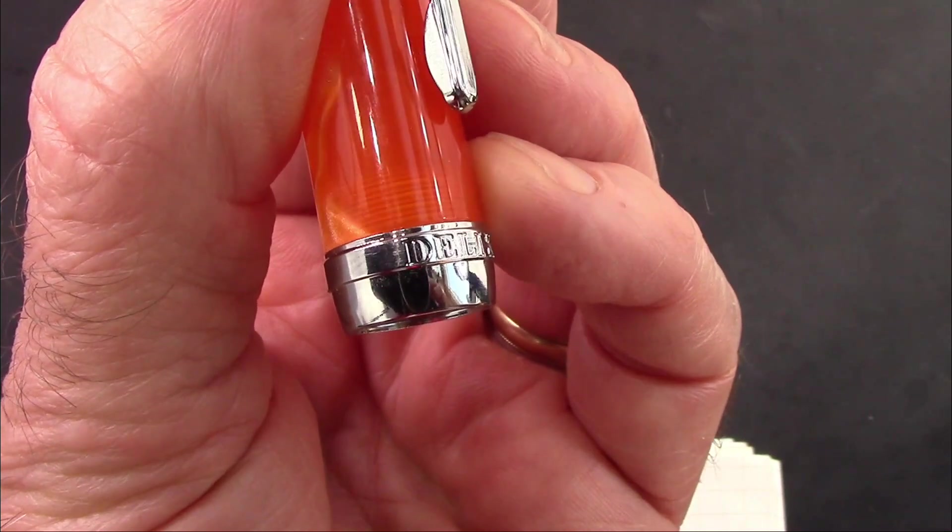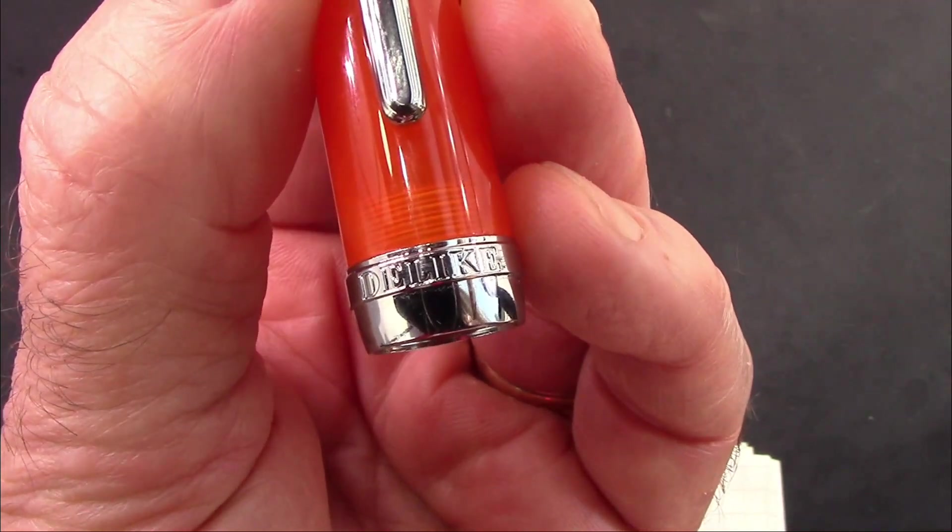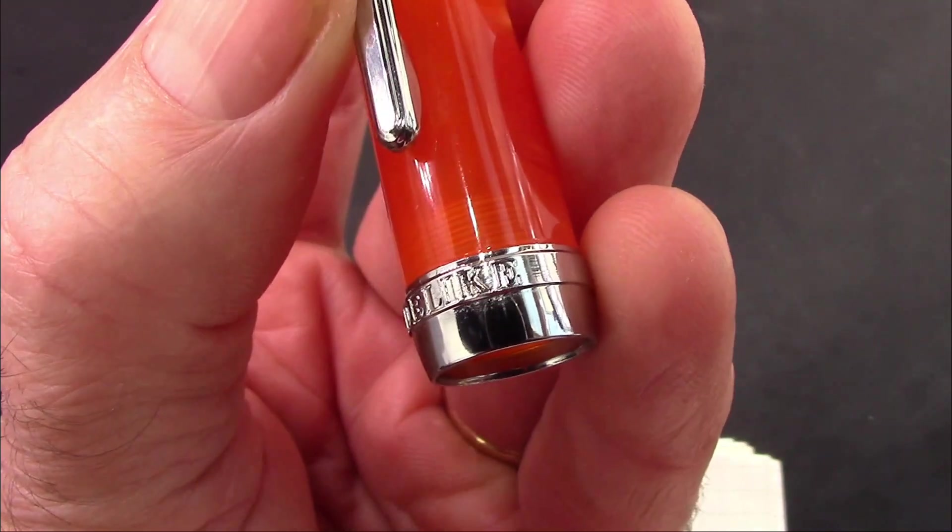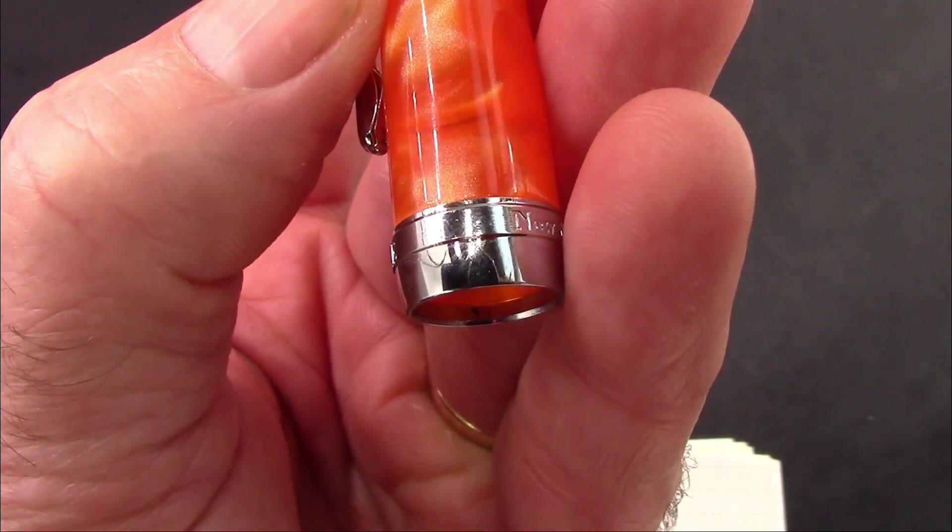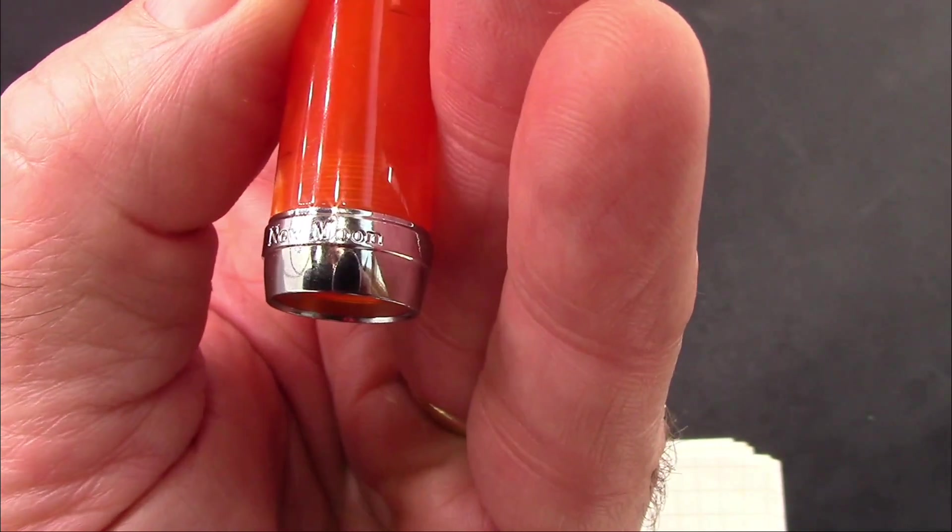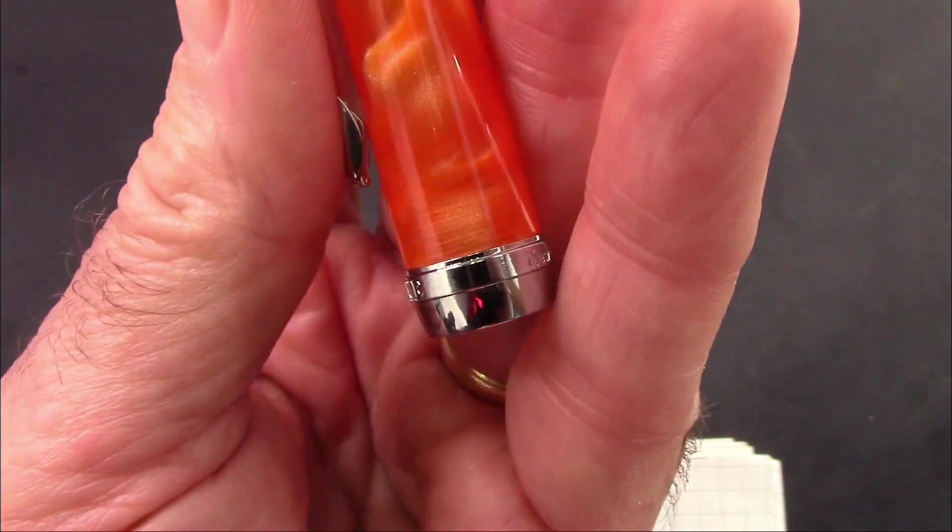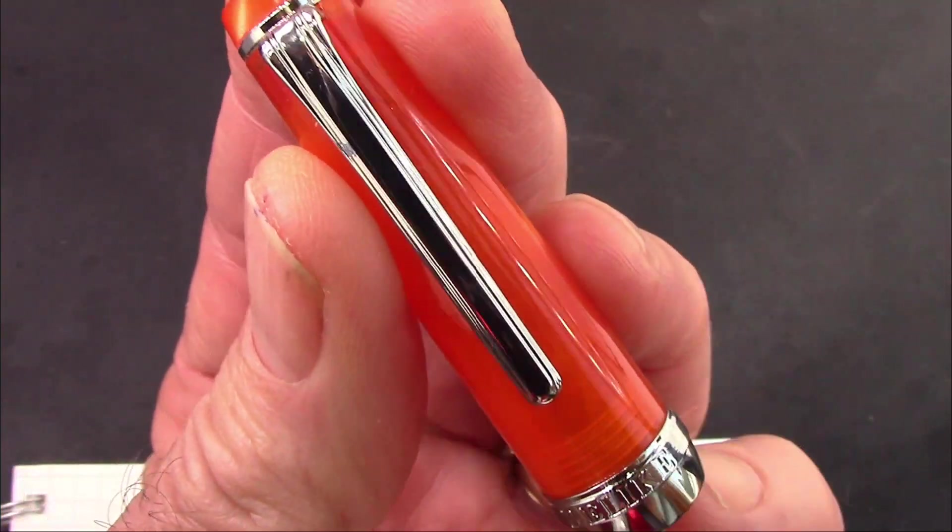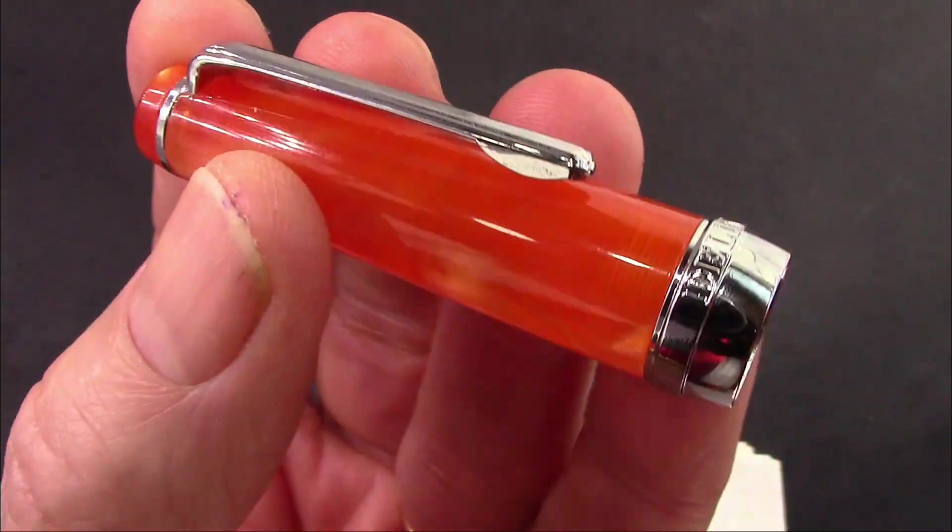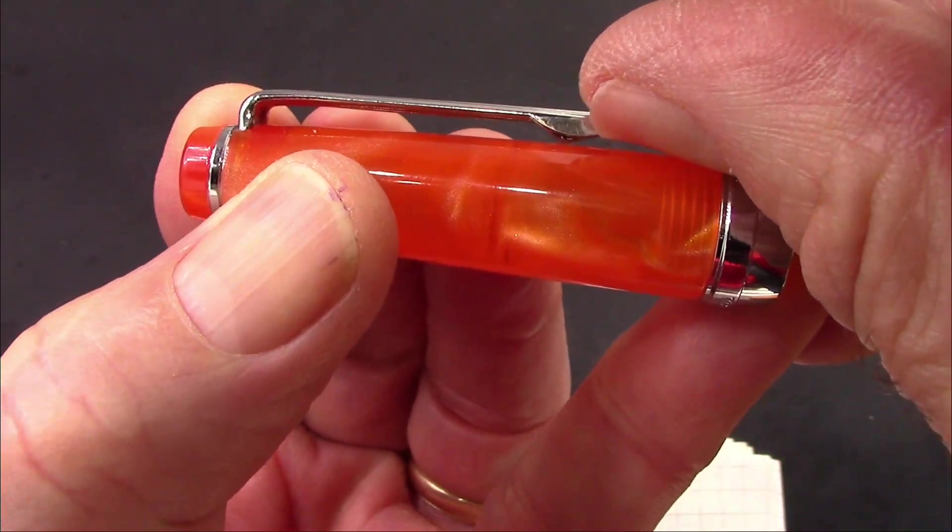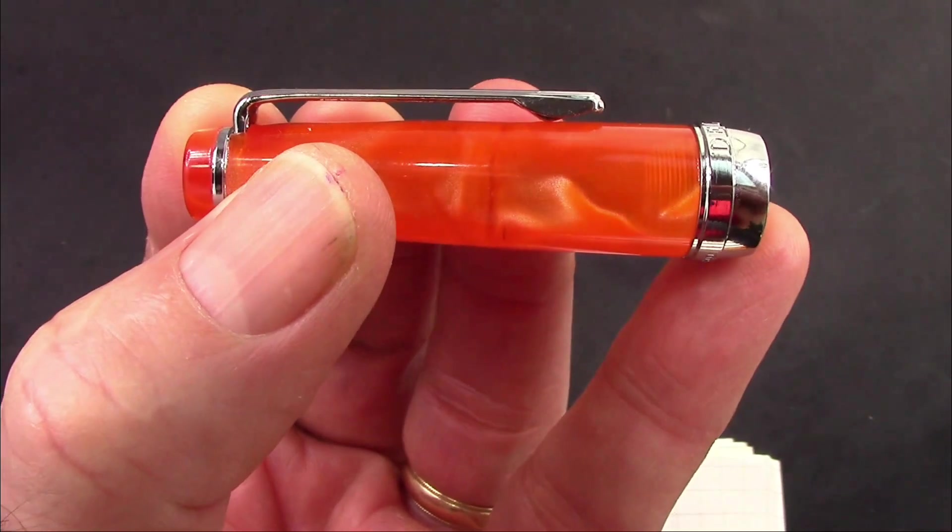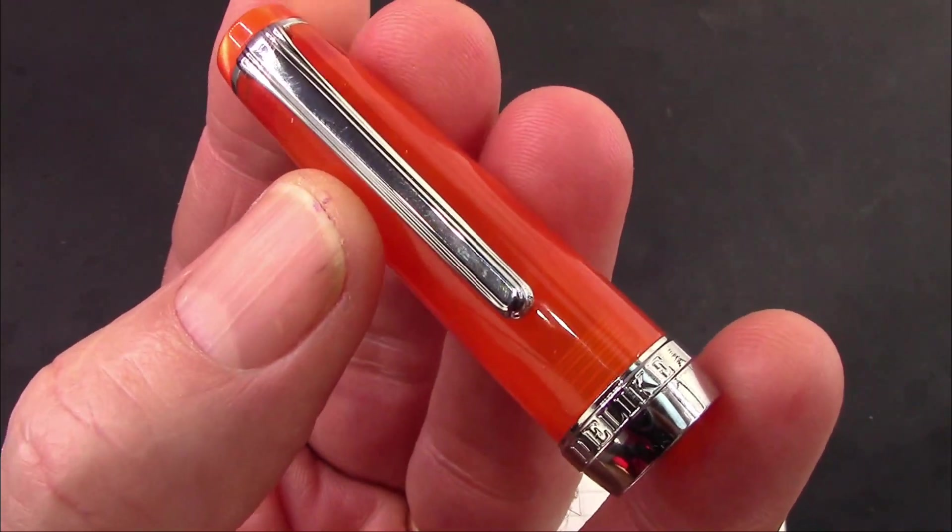It's a nice big cap band. It certainly protects it. And it is sufficiently labeled the Delike New Moon. Easy to read. All the plating is done nicely. That clip is very functional. It's really on the stiff side, but that way, once you put it in your pocket, it won't come out.